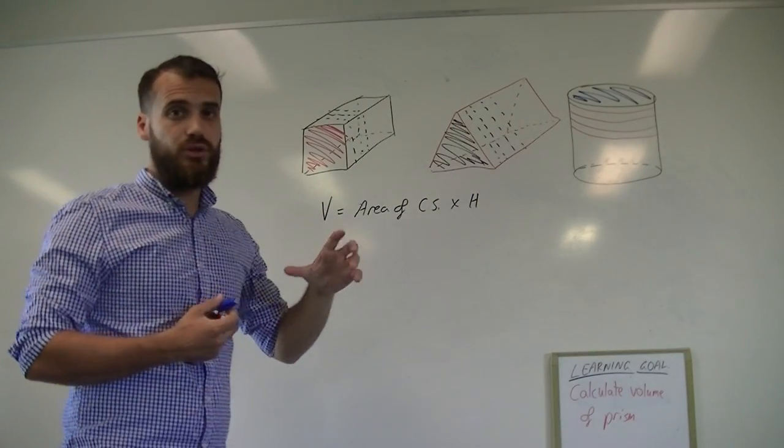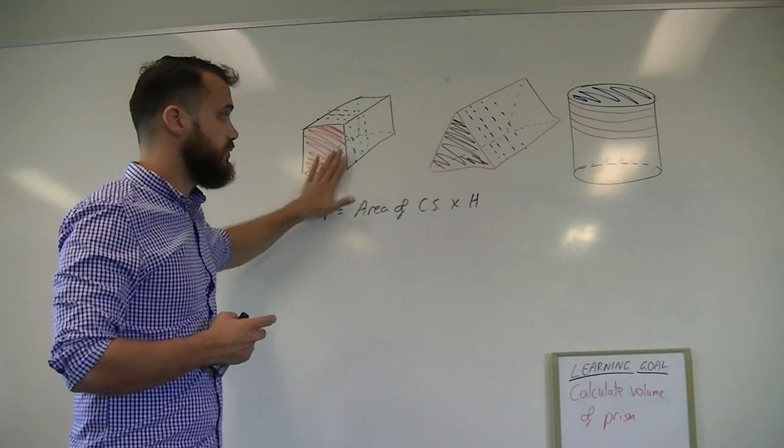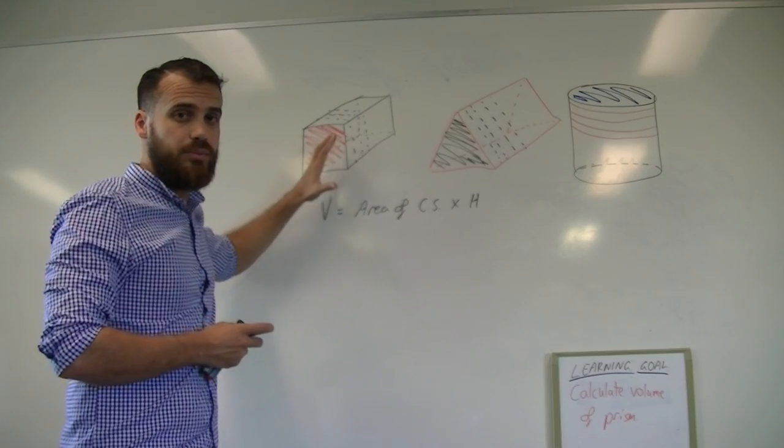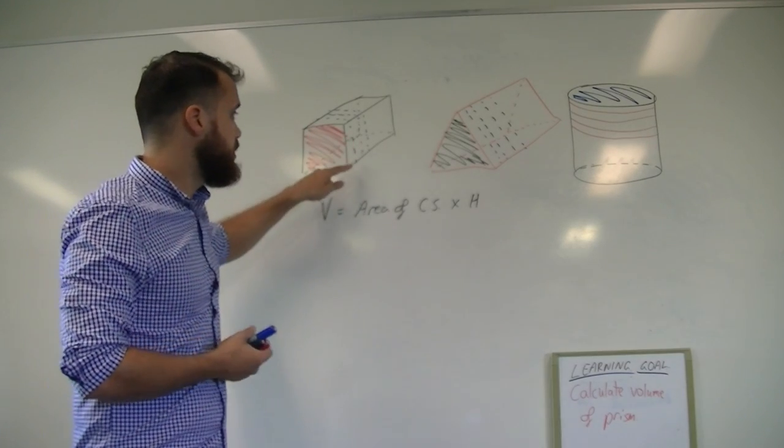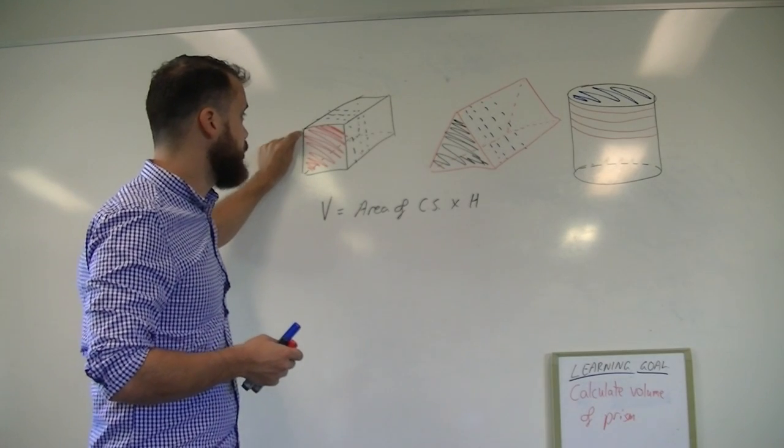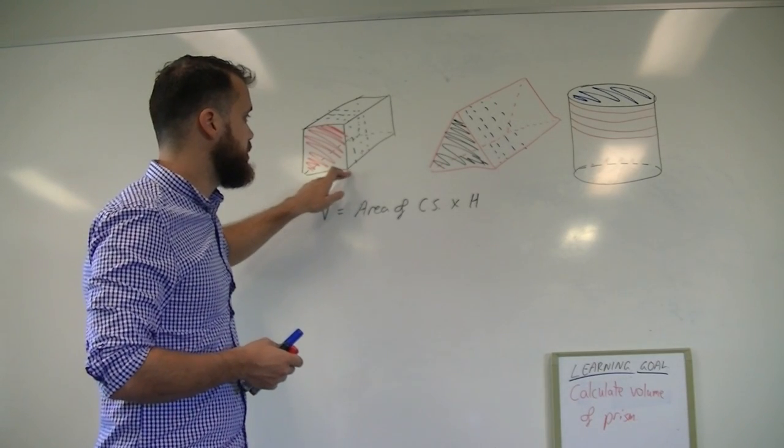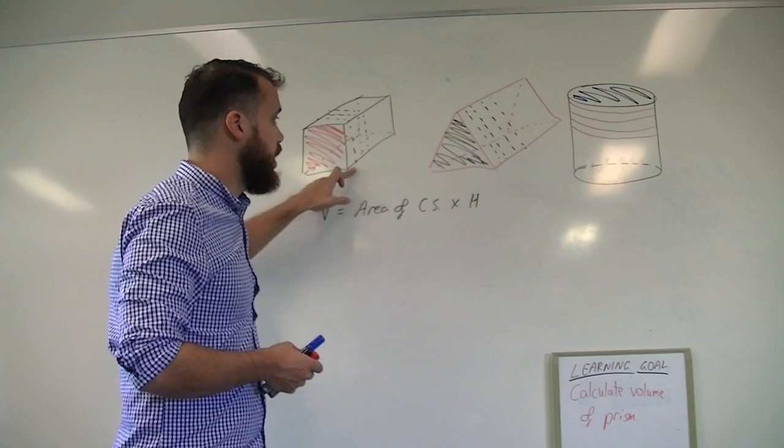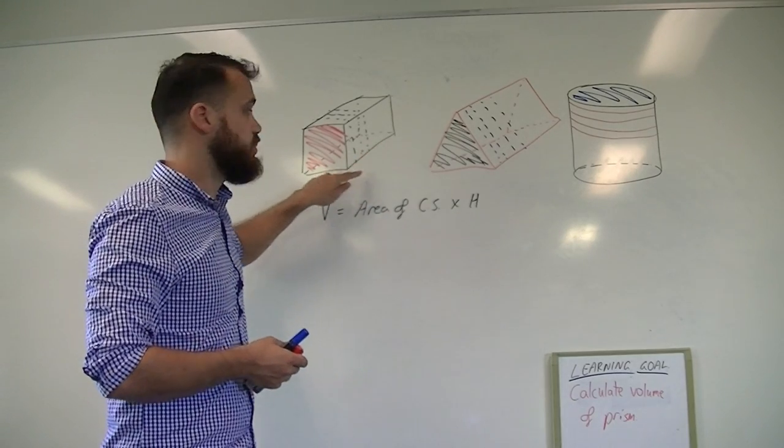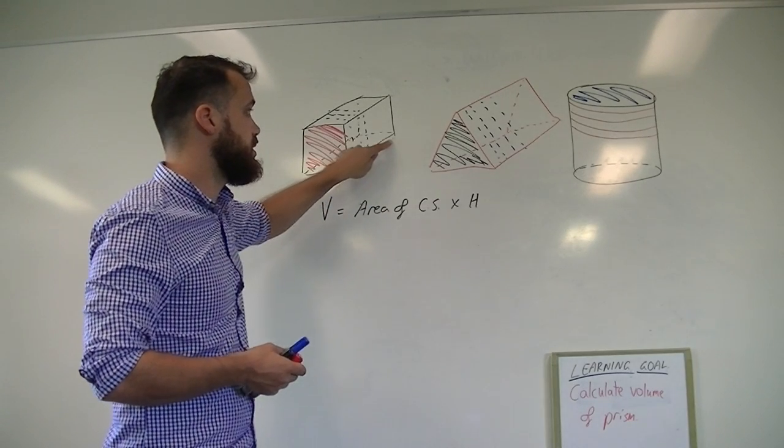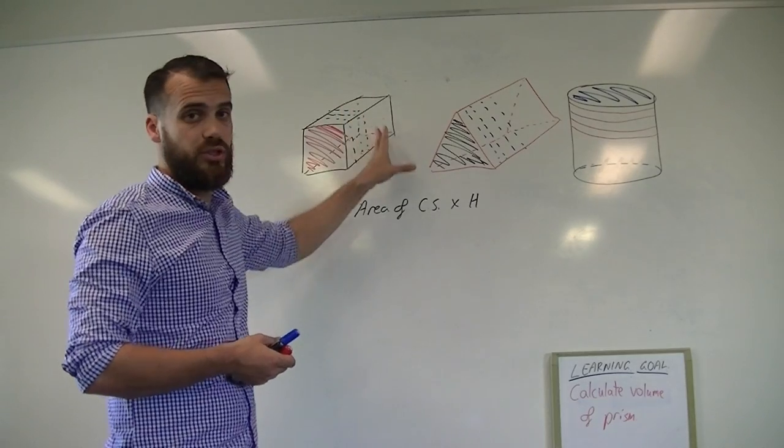So if you know the area of the cross section and we multiply it by the height. When we talk about height, we're not talking about height like upwards. We're talking about height as in the distance that it goes away from the cross section. So in this one, the height is actually from here to here. It's where you move your knife along as you cut it.